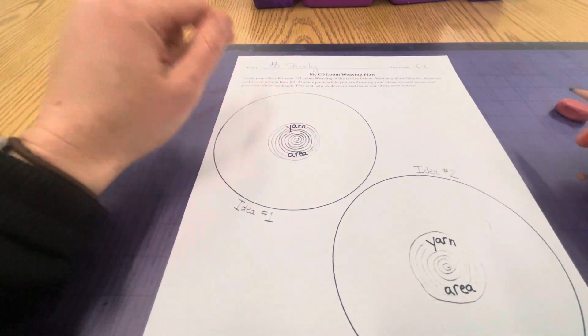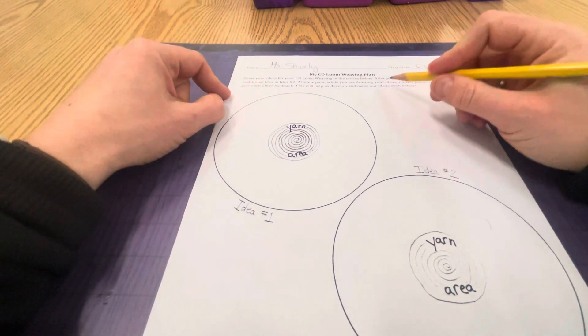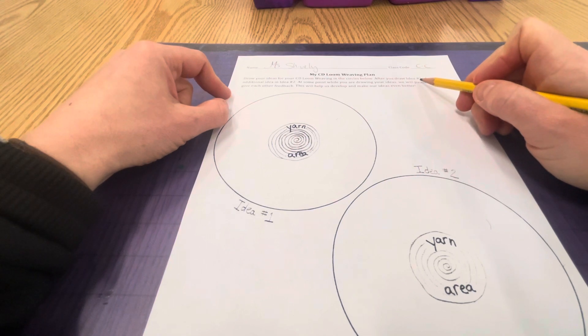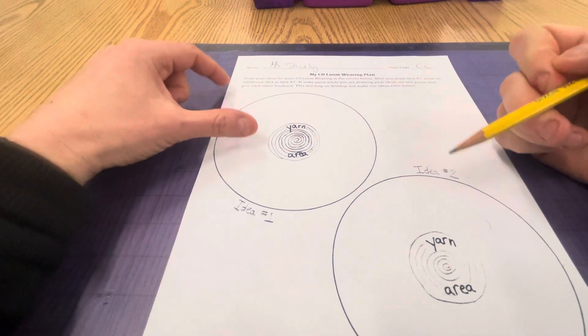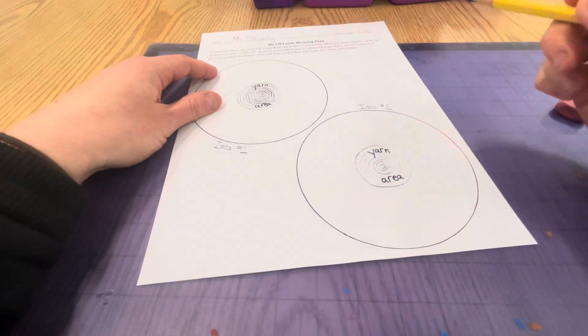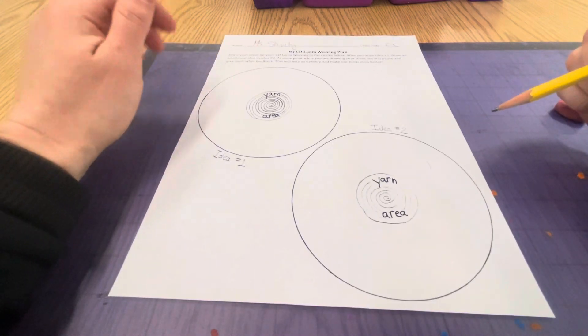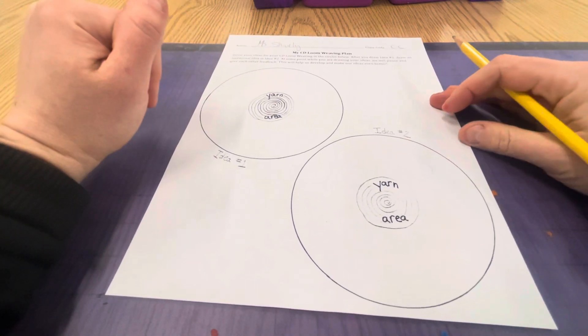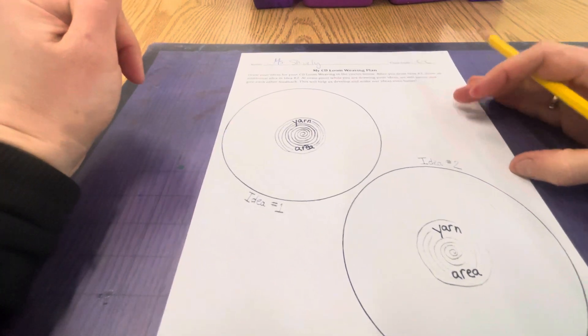It says draw your ideas for your CD loom weaving in the circles below. After you draw idea number one, draw an additional idea for idea number two. At some point while you're drawing your ideas, we'll pause and give each other feedback. This will help us develop and make our ideas even better.